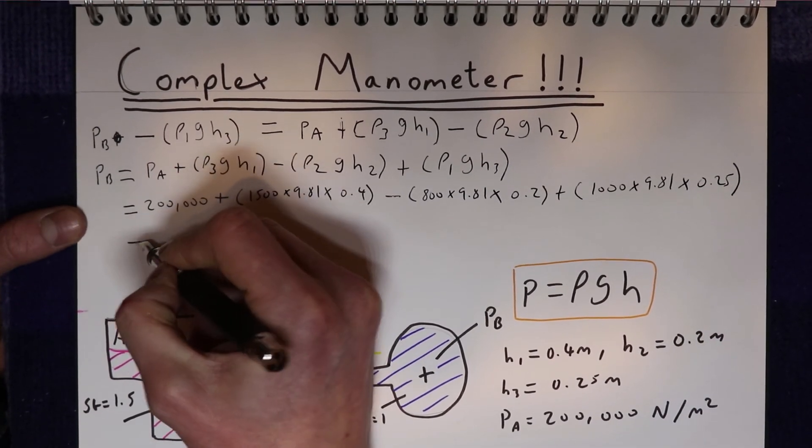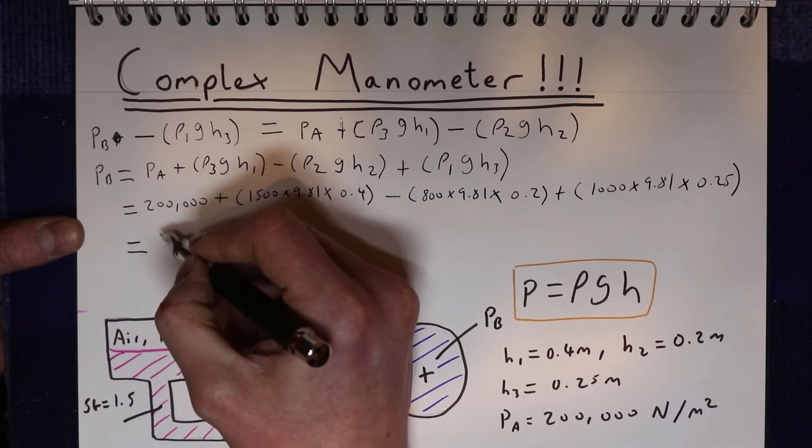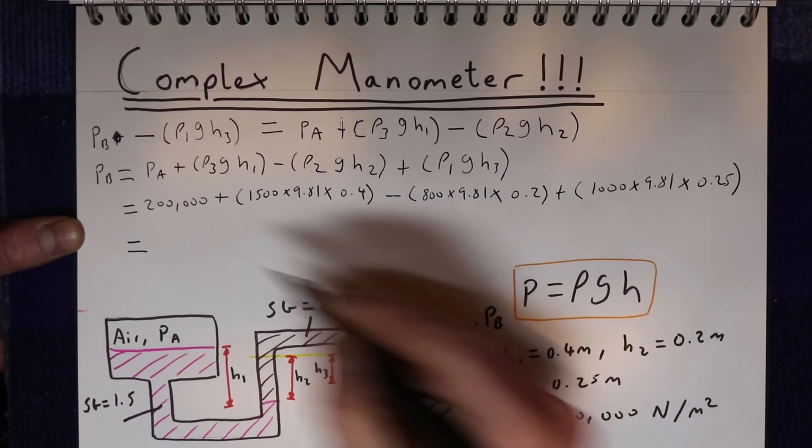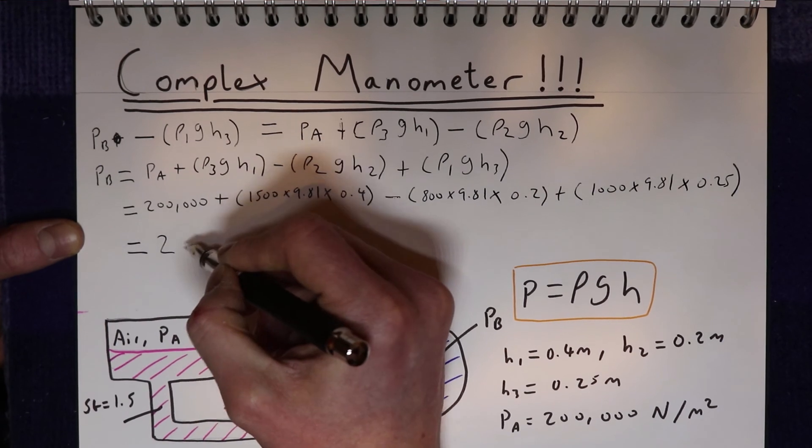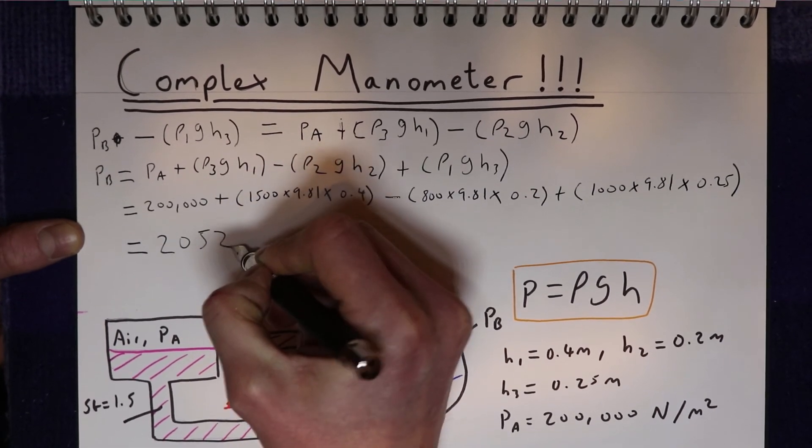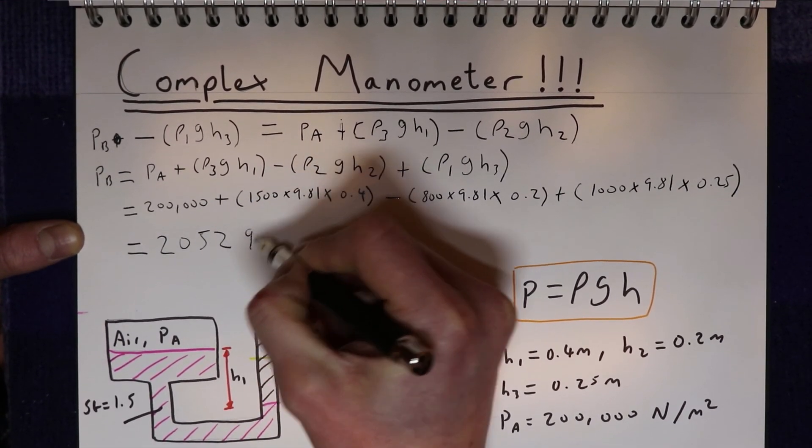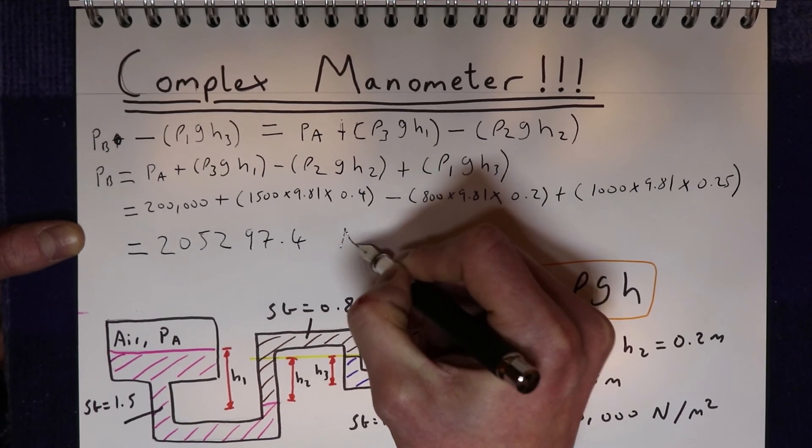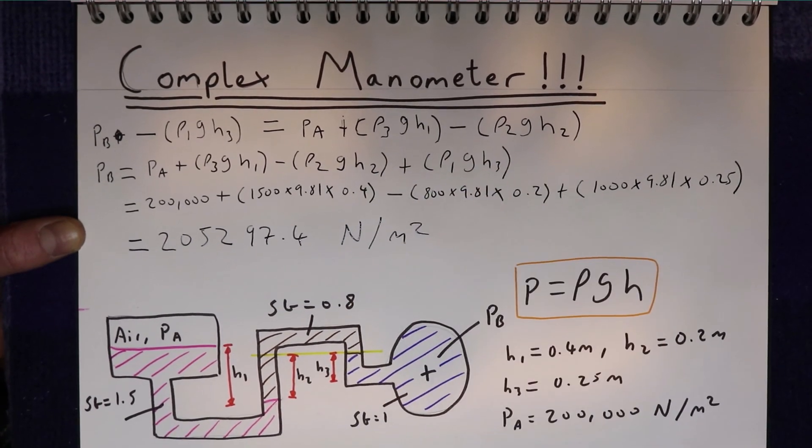And if you plug all that into a calculator, it should give a final answer for the pressure in the pipe PB of 205,297.4 newtons per meter squared.